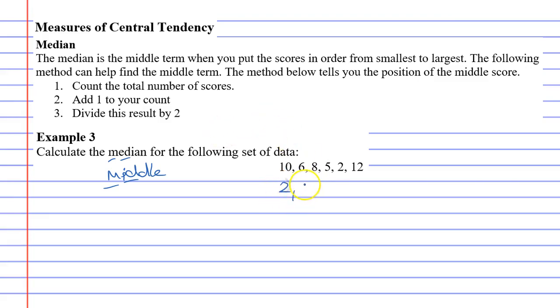First of all, we know we put this in order, so 2, 5, 6, 8, 10, and 12. And a lot of people just look at it and they're like, okay, this is really simple. The middle number is between the 6 and the 8, because there's 3 on each side. Now, you don't always get simple questions where the middle is really obvious.